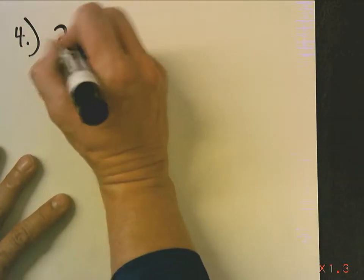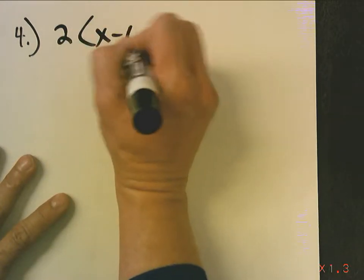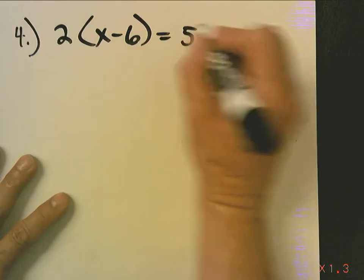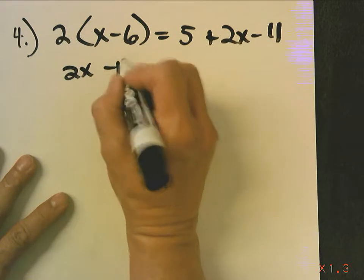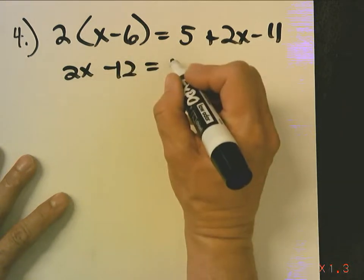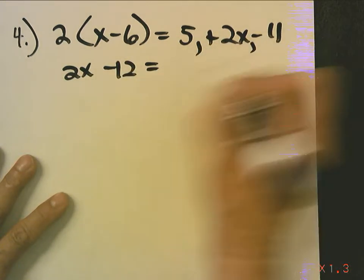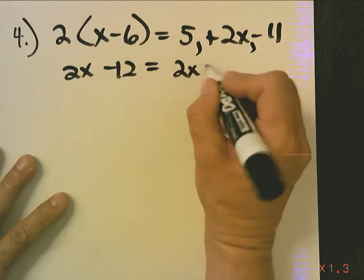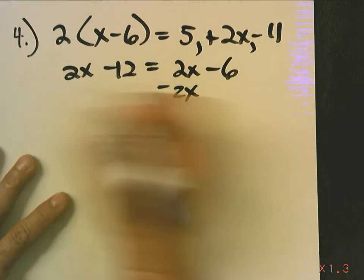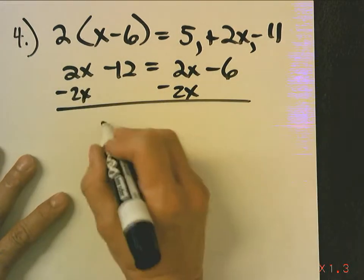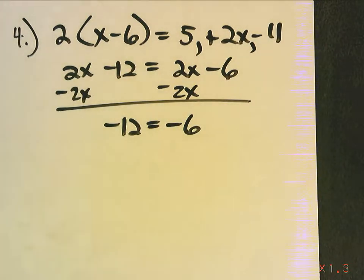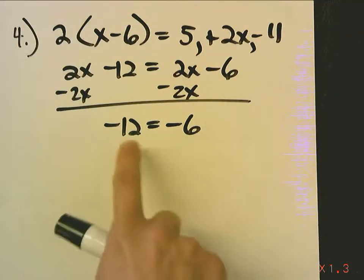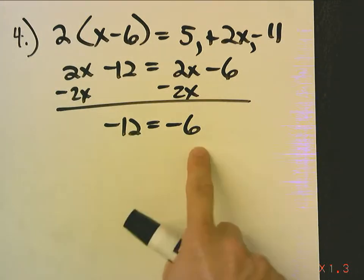Now, let's look at the next one. 2 times x minus 6 equals 5 plus 2x minus 11. I'm going to distribute 2x minus 12 equals, now I'm going to combine my 5 and negative 11, 2x minus 6. I'm going to subtract 2x, subtract 2x. Now, I end up with negative 12 equals negative 6. And I go, uh-oh, my variable disappeared again. But this time, I ended up with a false statement.